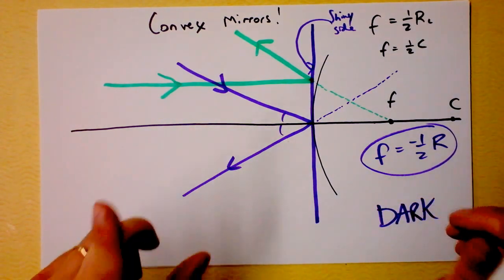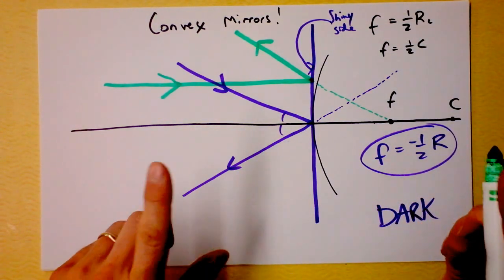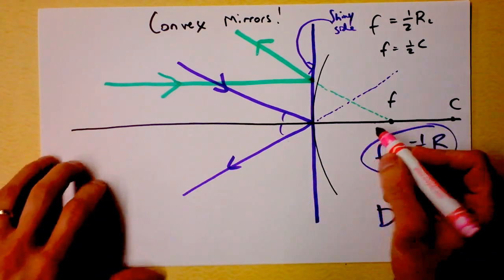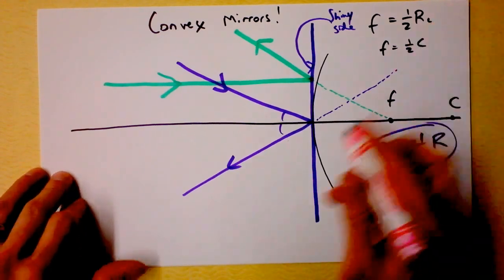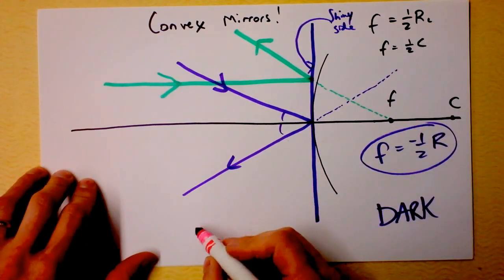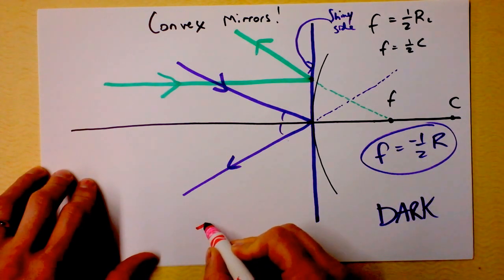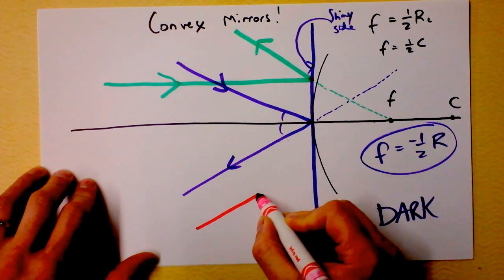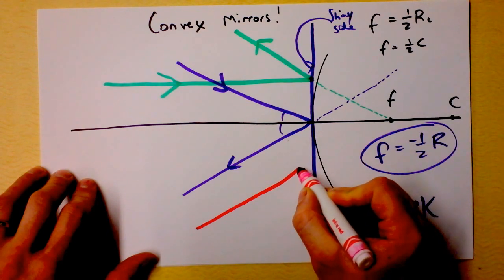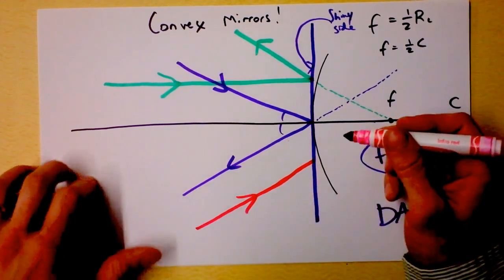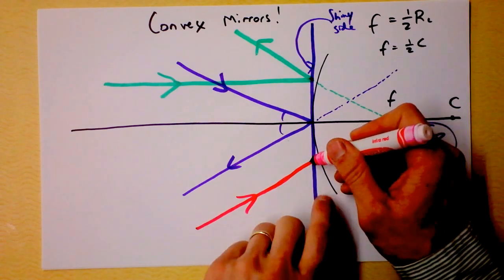Next up, you could have a ray that, watch this one, you could have a ray that seems to be heading towards the focus. Watch this. If it's going towards the focus, here we go, going towards the focus, then when it hits the active plane of the mirror,